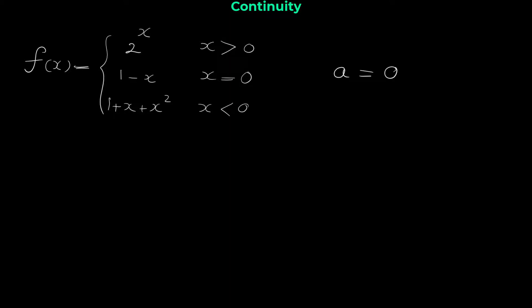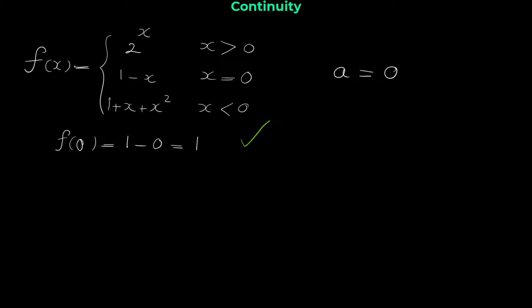Similar to the first example, we start by checking if f of 0 is defined. When x equals 0 we use the second rule: plugging in 0 gives f of 0 = 1 − 0 = 1. So the function is defined at 0 and the first condition for continuity is satisfied.